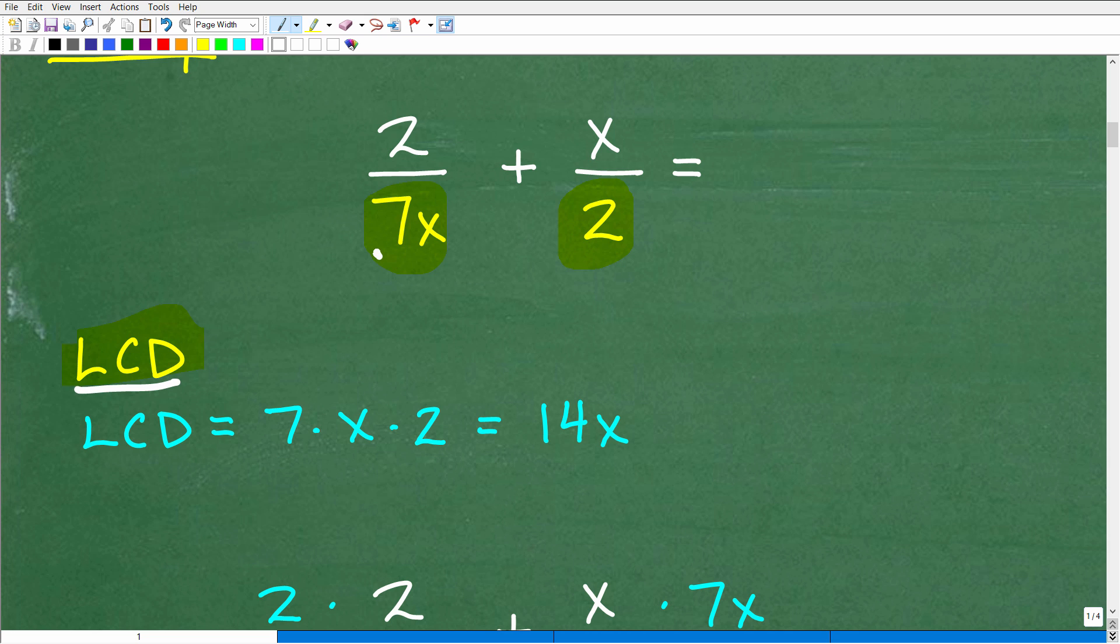So the LCD is basically, we have to look at the prime factors of each of the denominators. So the prime factors of seven X is seven times X. And then the prime factors of two is two times one. Of course, we don't have to put in one as a factor because one is a factor of all numbers. So to find the LCD, what you need to do is take all the prime factors of each of the denominators involved and find the product of all those prime factors. Now that's kind of a quick way of saying it. There's more kind of detail involved, but if you understand what I just said there, you should be able to understand that the LCD here is going to be seven times X times two or 14 X.